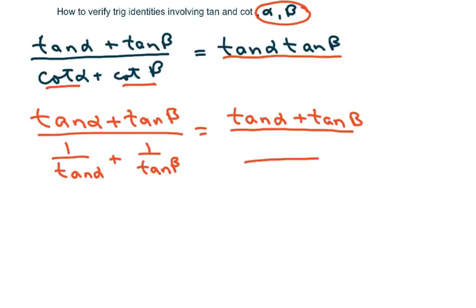And my common denominator is tan alpha tan of beta. And I'm going to go ahead and cross and just write this as tan of beta plus tan of alpha.